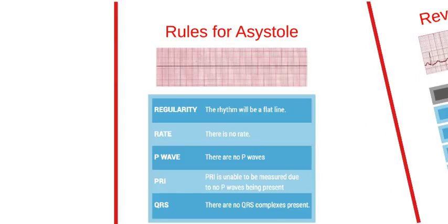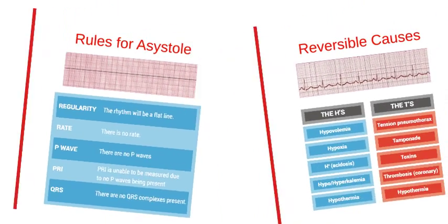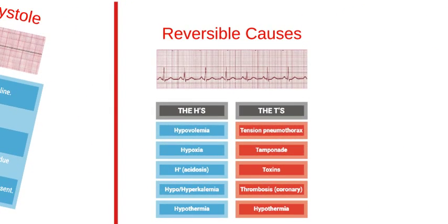Here are the rules for asystole. This is provided in your manual, and we encourage you to take this time to study this chart. Here are the reversible causes, which include the H's and the T's.